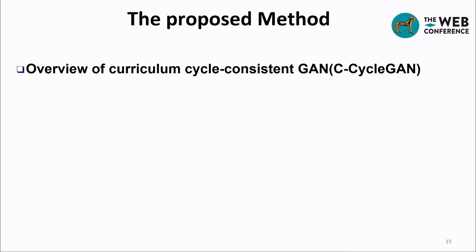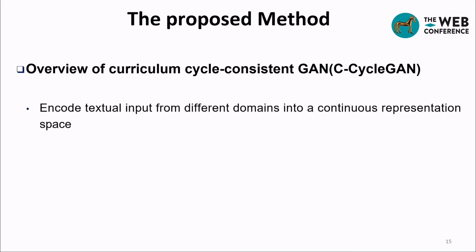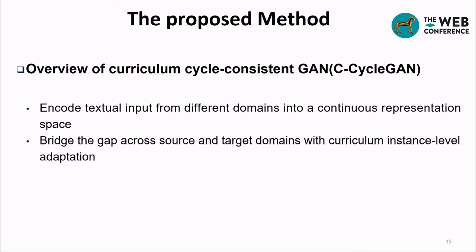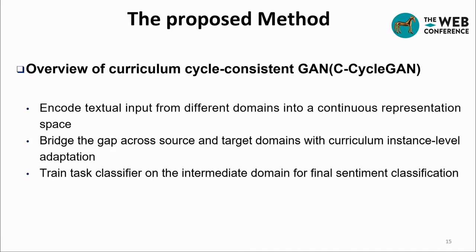This is the framework of C-CycleGAN. Overall, we encode textual input from different domains into a continuous representation space. After that, we bridge the gap across source and target domains with curriculum instance-level adaptation. Finally, we train a task classifier on the intermediate domain for final sentiment classification.